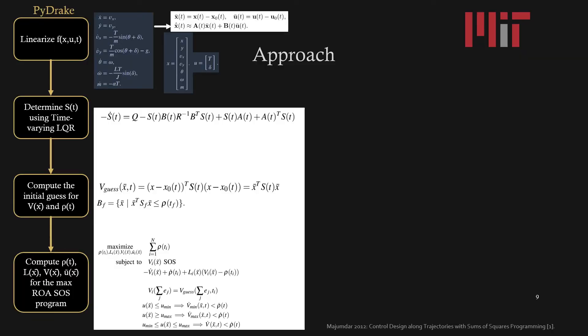This project is broken into two parts. First is implemented in Pydrake where the dynamics of the system are linearized. S of t from the time varying LQR is determined. V of x and rho of t are computed for the initial guess. And finally, all parameters are determined using the maximum region of attraction SOS program.